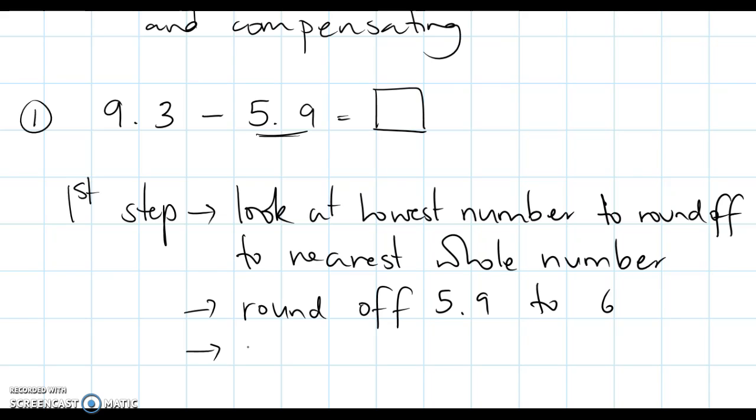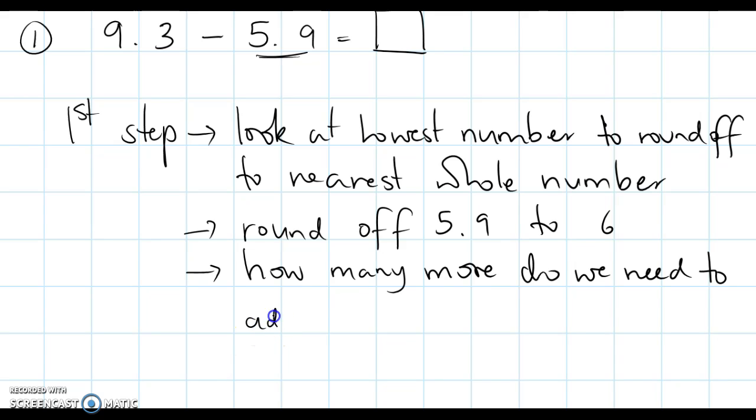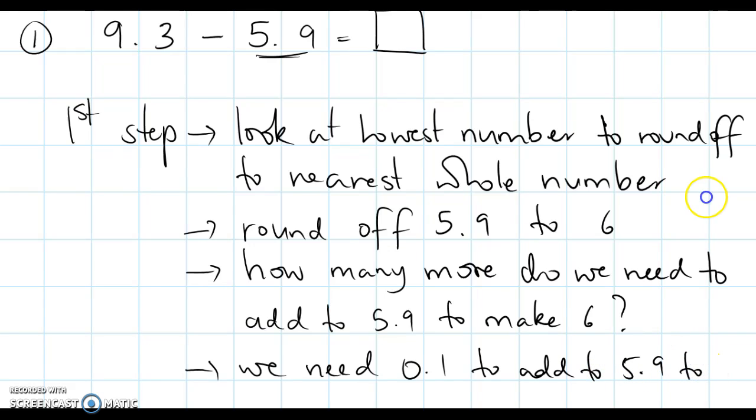So, how many more do we need to add to 5.9 to make 6? Just write that down. How many more do we need to add to 5.9 to make 6? So, how many more do we need to add to 5.9? So the answer is, so we know 5.9, how many more do we need? 0.1. So we need 0.1 to add to 5.9 to make 6.